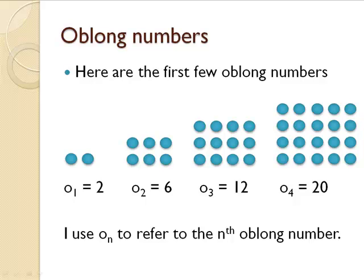I'm using the sequence O sub n to refer to the nth oblong number. So since 6 is the second oblong number, I'm calling it O sub 2.